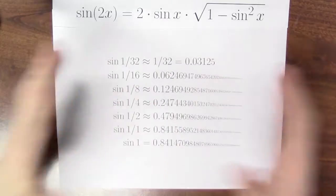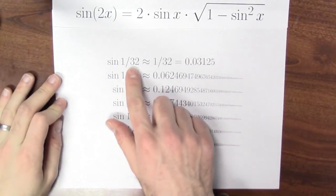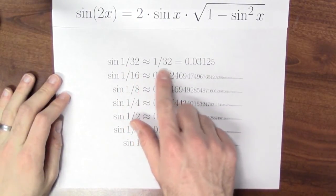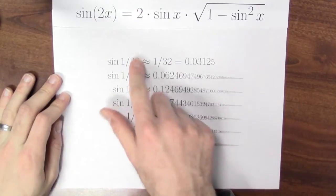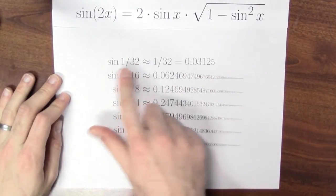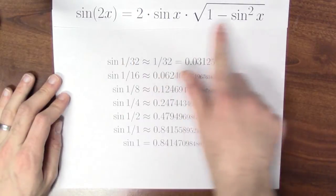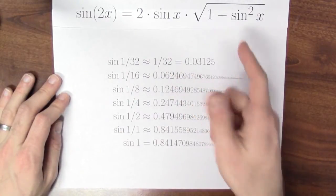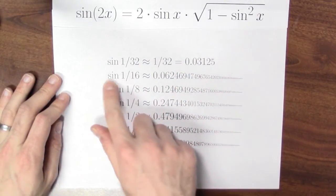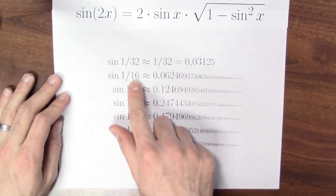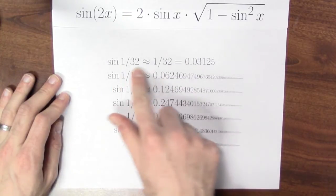We can put these pieces together. Here's what we do. I know that sine of 1/32 is very close to 1/32 because 1/32 is close to 0 and sine of a number close to 0 is about that same number. Then I can use this double angle formula entirely in terms of sine to get an approximate value for sine of 1/16 by using my approximate value for sine of 1/32.